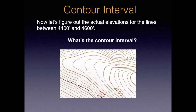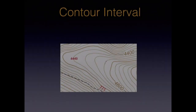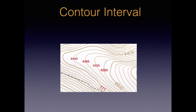Now let's figure out the elevations for each contour line between 4,400 and 4,600 feet. First, we need to figure out the contour interval. The interval is 40 feet — 200 feet between the marked index contours divided by 5. We add 40 feet to 4,400 and we have the elevation of the next higher contour line. Let's do this for four more lines: add 40 feet onto that line, we get 4,480, 4,520, and 4,560 for our final line.